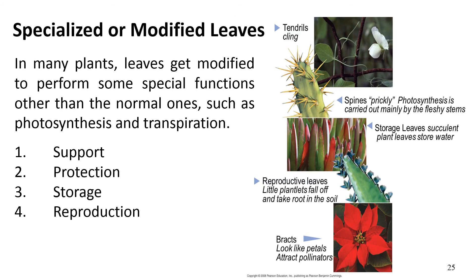In many plants, leaves get modified to perform special functions other than the normal ones such as photosynthesis and transpiration. Sometimes these modifications are in response to certain environmental conditions. Whole leaves or parts of leaves are often modified for functions such as climbing and substrate attachment, storage, protection against radiation or climatic conditions, and for reproductive purposes.